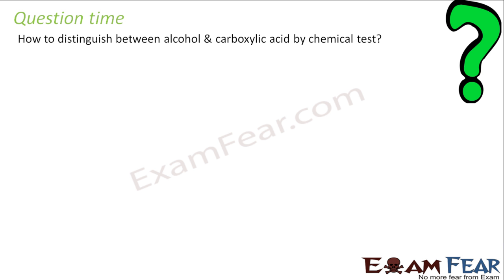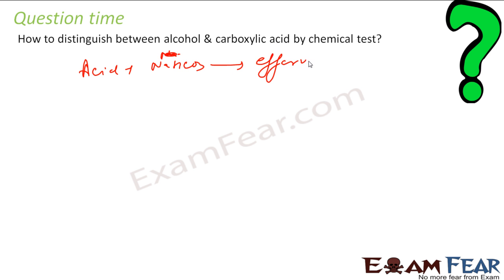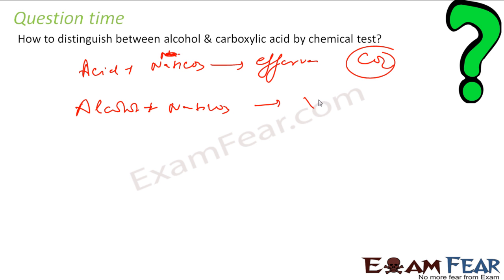Now we have a question: how to distinguish alcohol and carboxylic acid by a chemical test. If you use sodium bicarbonate or sodium carbonate on the acid, it will give effervescence — CO2 gas. But if you use NaHCO3 on alcohol, there is no reaction. So if you have an unknown substance and want to find if it is alcohol or carboxylic acid, just add sodium bicarbonate. If you get a gas that turns lime water milky (CO2), then you have an acid; otherwise it is alcohol.